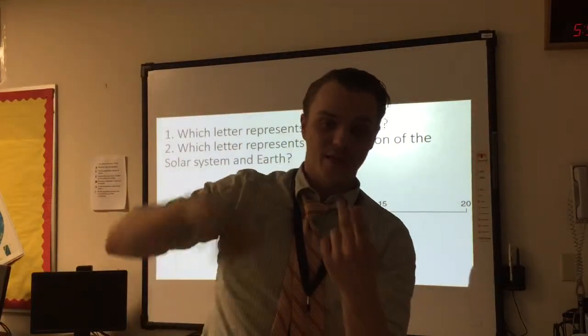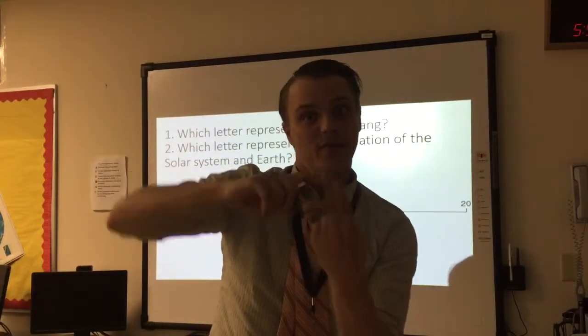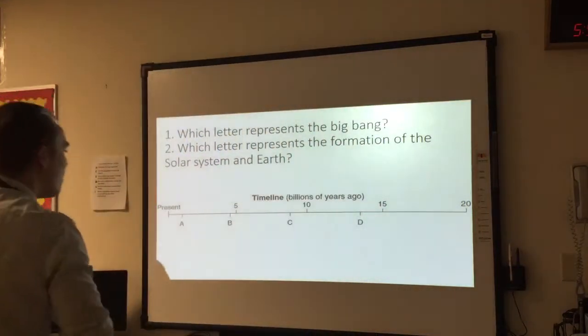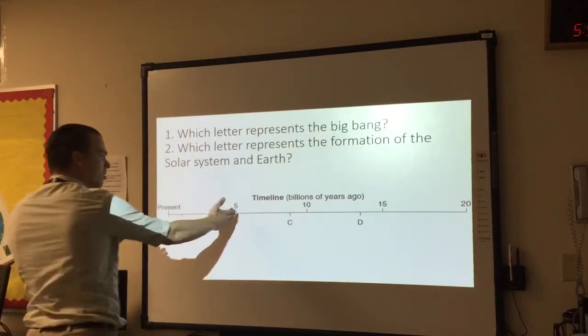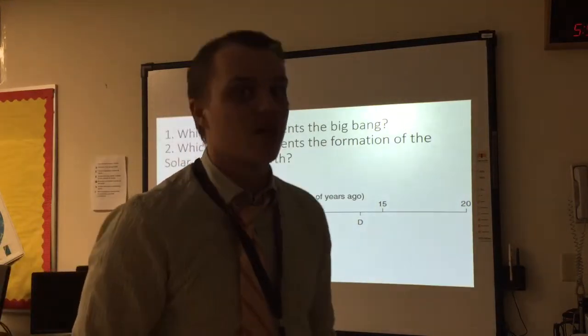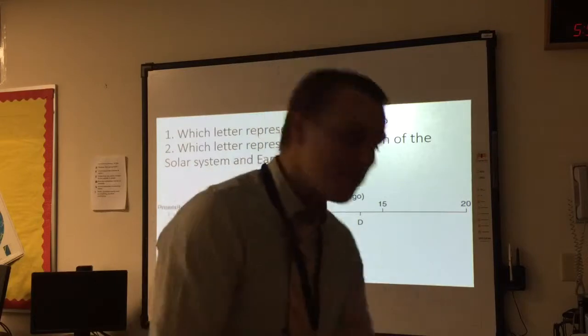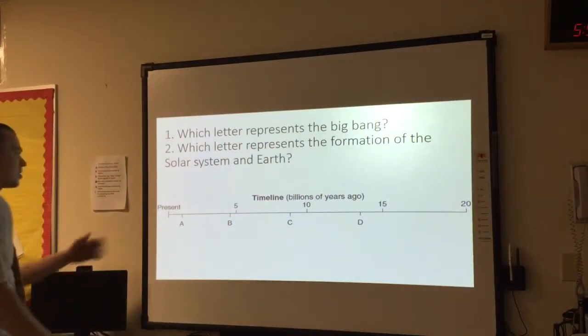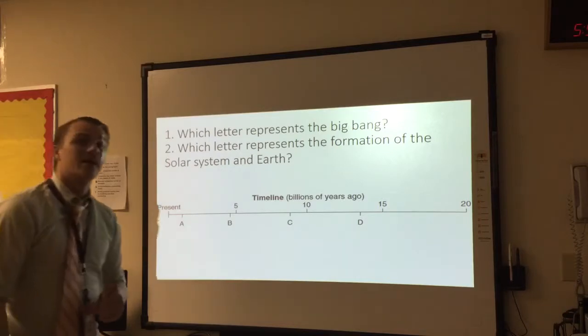Now the formation of our solar system, aka the formation of the sun, and the formation of the Earth a little bit later, that was about 5 billion years ago for the sun. But the Earth was 4.6 billion years ago. It formed 4.6 billion years ago, which is a bit before 5 billion years. That's going to be letter B.